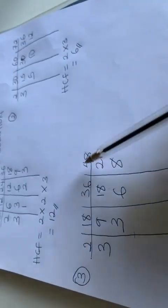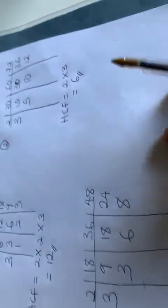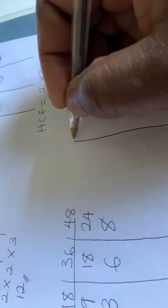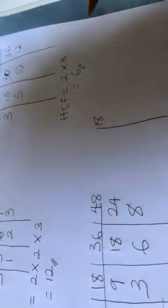So to summarize: the HCF of 12, 24, and 36 is 12. The HCF of 30, 60, and 72 is 6. The HCF of 18, 36, and 48 is 6. If you don't want to use the table together, you can actually do it separately — for the 18 you do it separately, then for the 36 separately, and for the 48 separately. You will still arrive at the same answer.